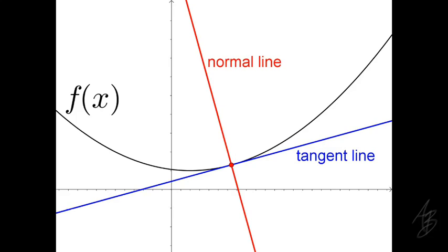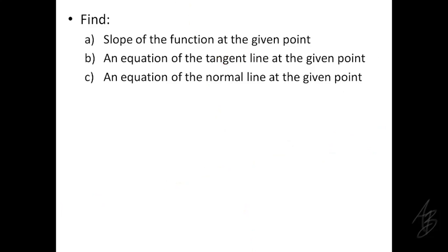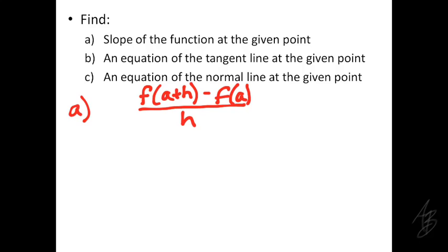Let's look at the three things I'm going to ask you to do. First, we'll find the slope of the function at a given point. If we remember the difference quotient, f of a plus h minus f of a, all over h — this gives us the average rate of change over the interval with left endpoint at x equals a and width h. The slope of the function at a given point is the limit of that difference quotient as h approaches zero, and that will work as long as the limit exists.